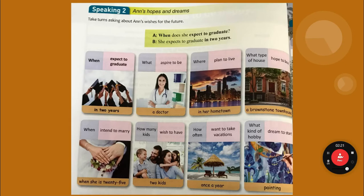Let's do this one more time — listen and repeat. When does she expect to graduate? She expects to graduate in two years. What does she aspire to be? She aspires to be a doctor. Where does she plan to live? She plans to live in her hometown. What type of house does she hope to buy? She hopes to buy a brownstone townhouse. When does she intend to marry? She intends to marry when she is 25. How many kids does she wish to have? She wishes to have two kids. How often does she want to take vacations? She wants to take vacations once a year. What kind of hobby does she dream to start? She dreams to start painting.